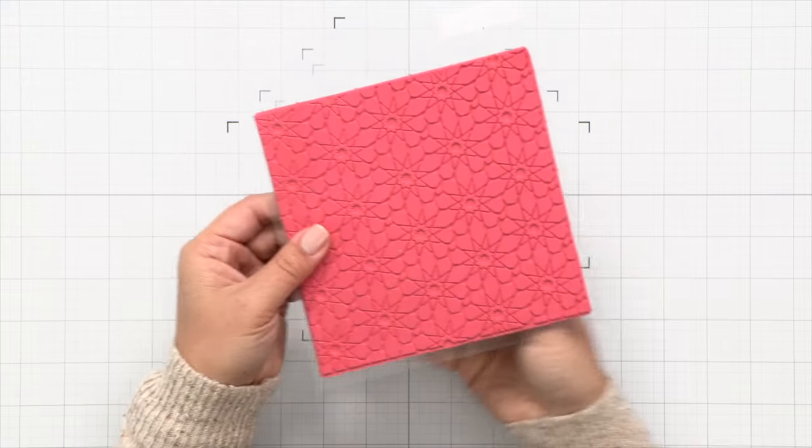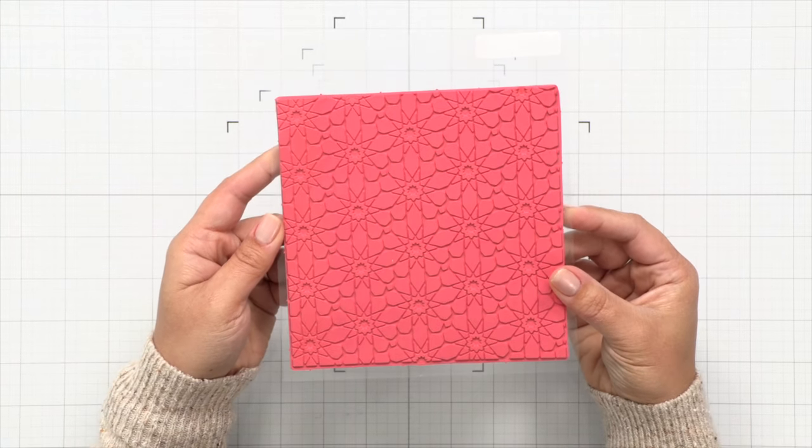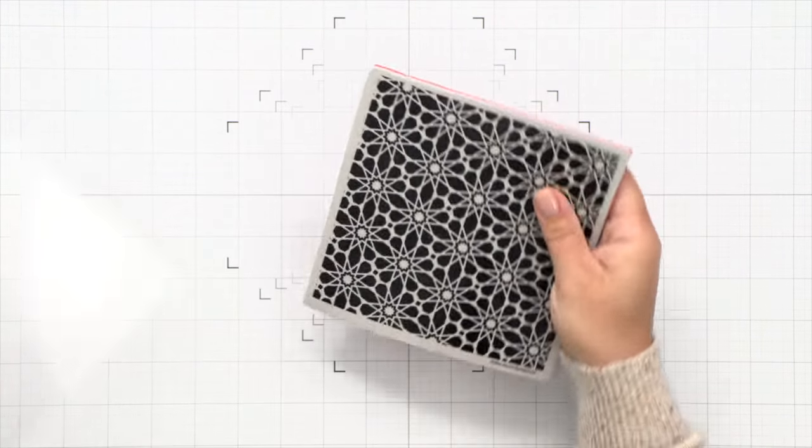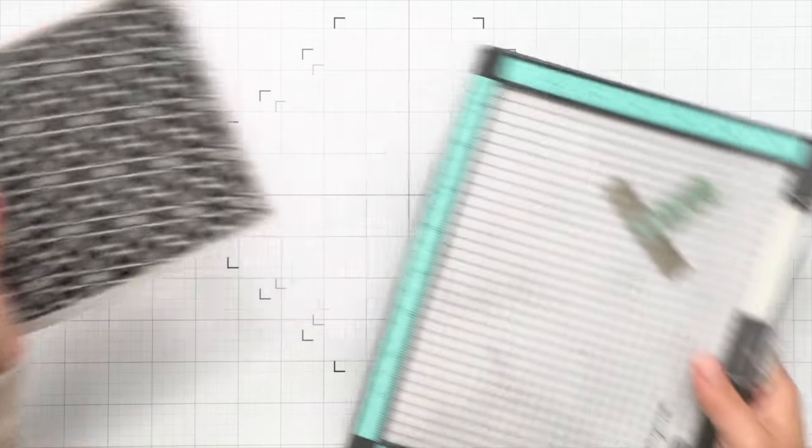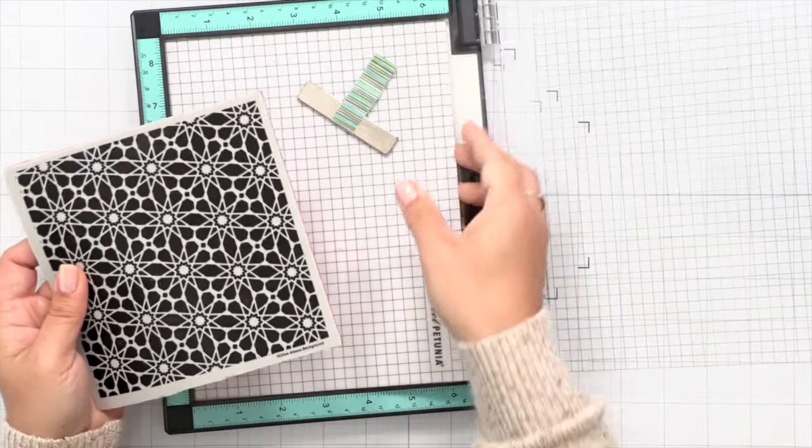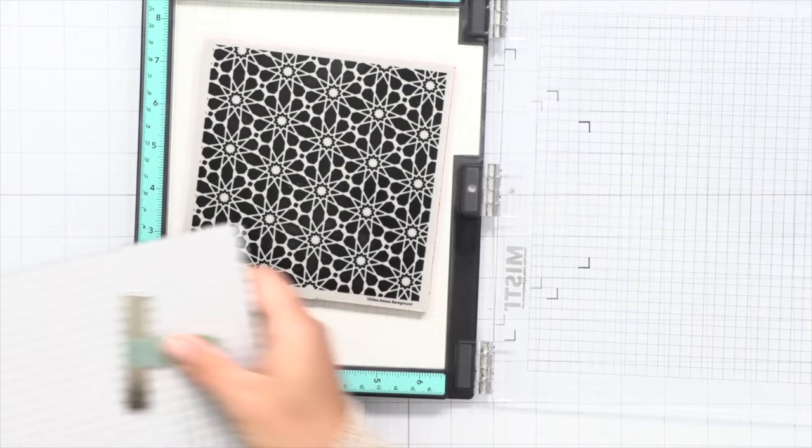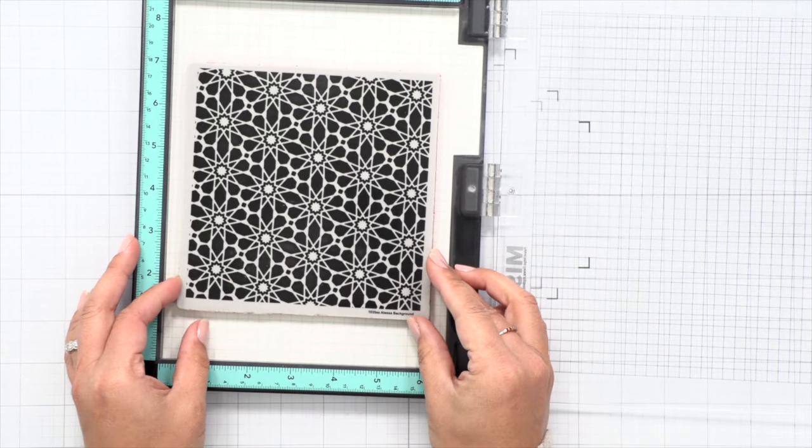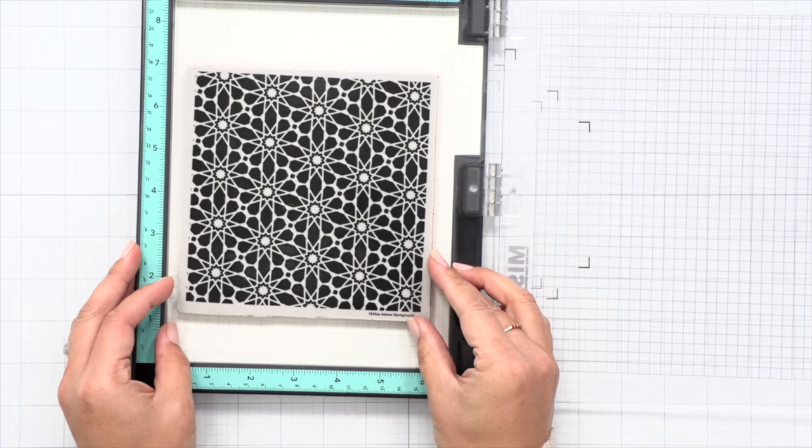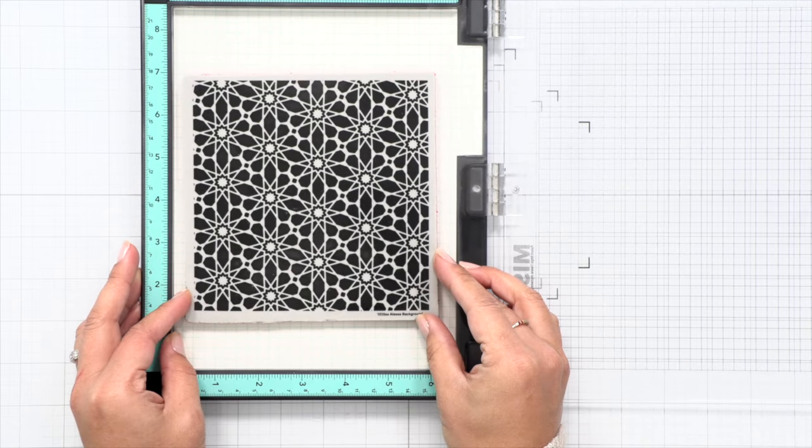A lot of times people don't know what to do with background cling stamps like this because they're solid and some people might even think that it's kind of limiting. So I want to share this process with you because we can make it super colorful and create a cool technique by giving it a faux watercolor look using some Distress inks.